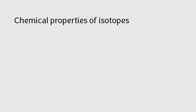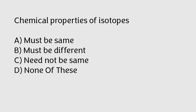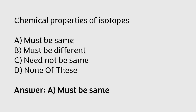Chemical properties of isotopes: must be same, must be different, need not be same, or none of these? The correct answer is option A — chemical properties of isotopes must be the same.